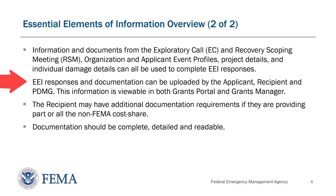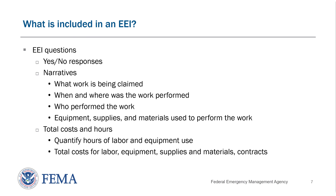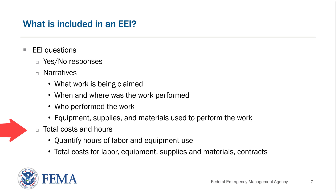EEI responses and documentation can be uploaded by the applicant, recipient, and PDMG, and are viewable in Grants Portal and Grants Manager. Note that the EEI can only be edited by the recipient and applicant when the EEI is at the process step pending applicant response. The PDMG will be unable to make edits while the EEI is pending applicant response. There are two parts to the EEI: questions and required documents. Based on your responses to yes-no questions, you'll be prompted to provide narrative responses that clarify what work is being claimed, when and where it was performed, who performed the work, and what equipment, supplies, and materials were used. You will also provide total hours and costs of work being claimed.